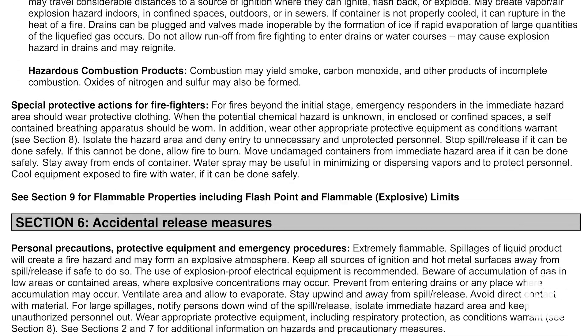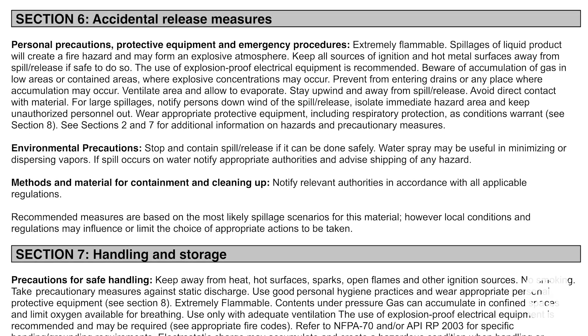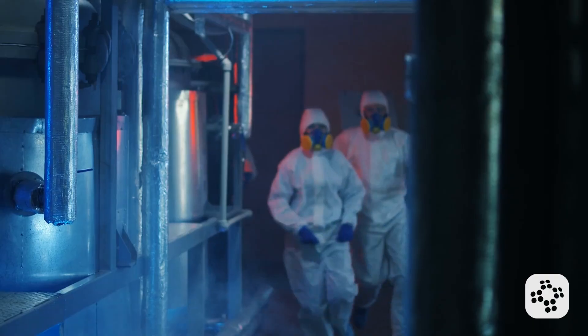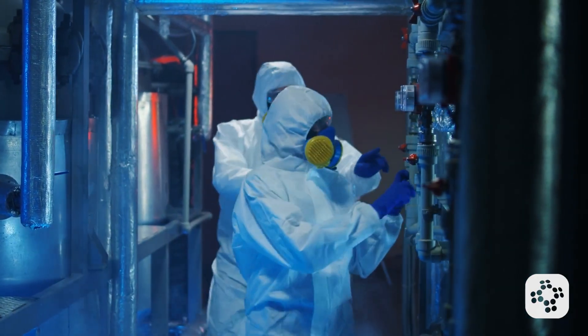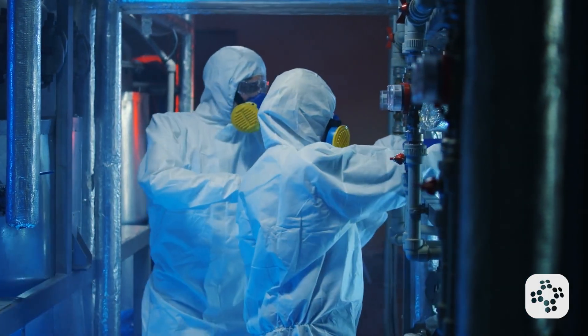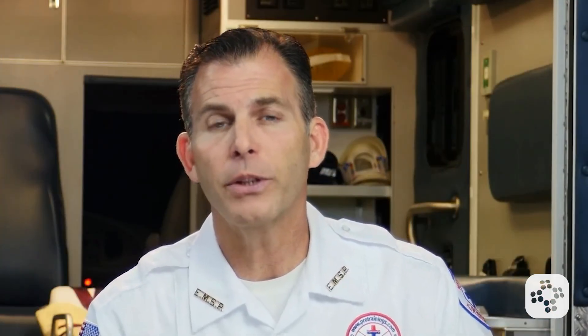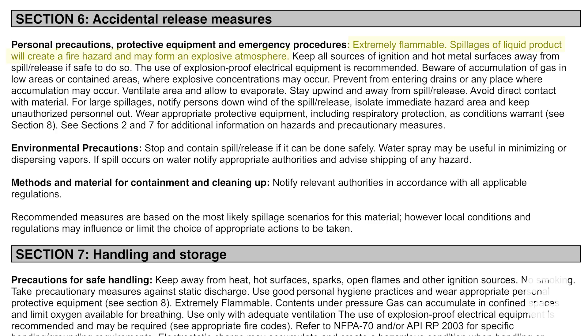Section 6: Accidental Release Measures. If there's a spill or leak, this section offers guidance on how to safely manage it, protecting both people and the environment. With propane, it notes it is extremely flammable — spillages of liquid product will create a fire hazard and may form an explosive atmosphere.